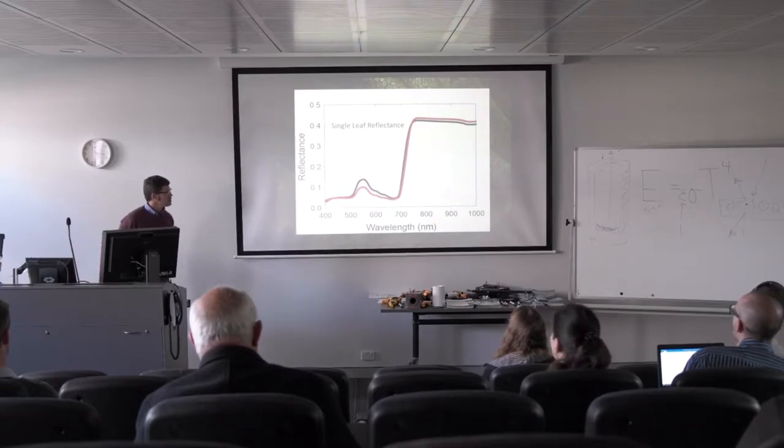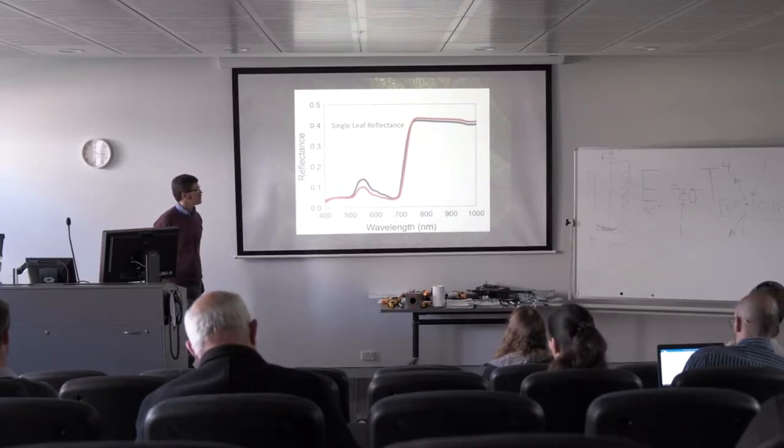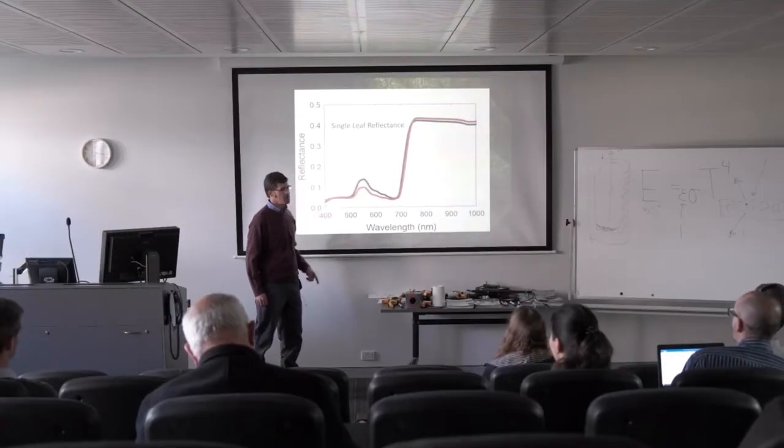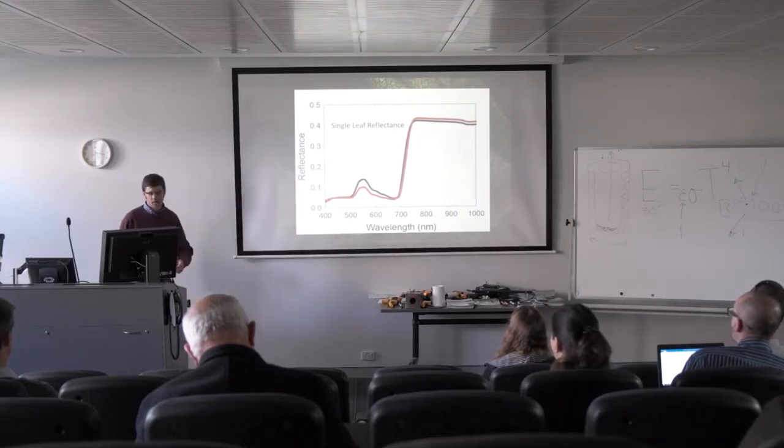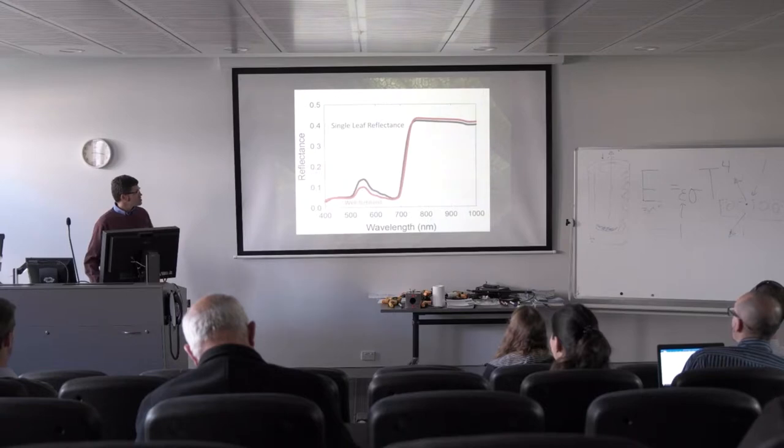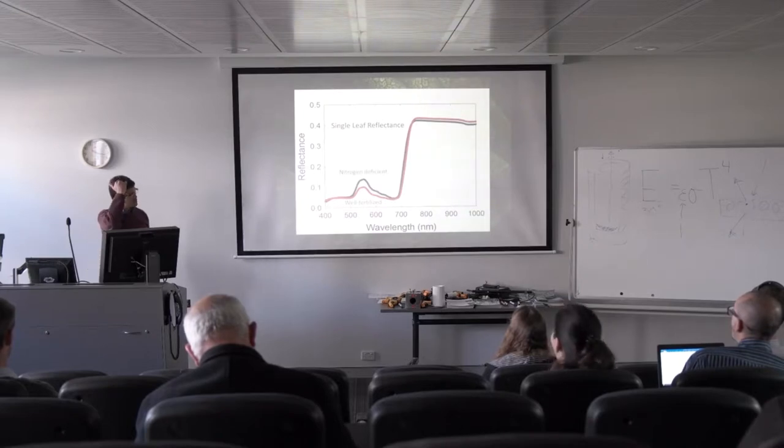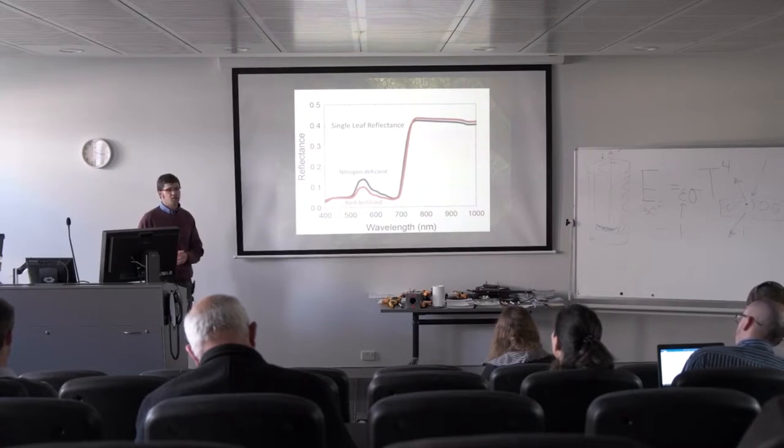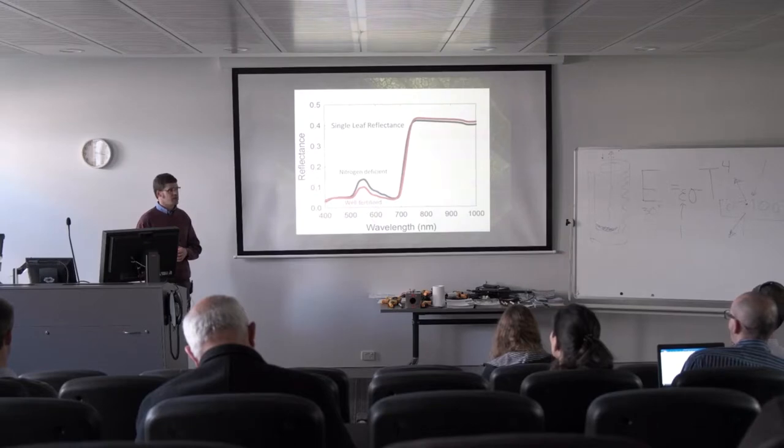To give you an idea of the kind of information that leaf reflectance might indicate, we have two reflectance spectra here. One where the peak in the green and some radiation in the red is more reflected than the other—the reflectance is higher. This would represent a well-fertilized leaf with high nitrogen content. This one would represent potential nitrogen deficit. You get changes in the spectrum as a function of properties of the leaf. Here it's related to nitrogen, but there could be other properties we can measure by analyzing changes in the reflectance spectrum.